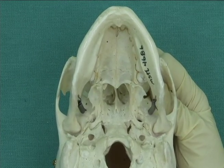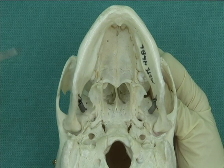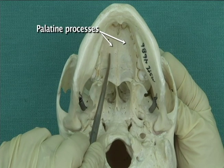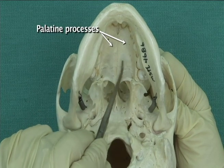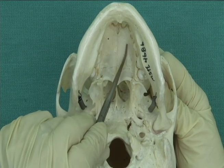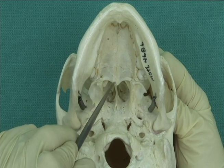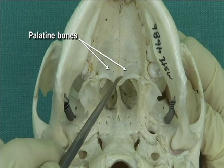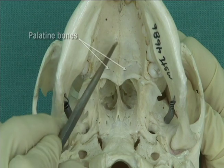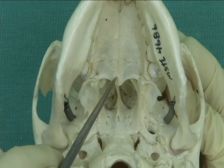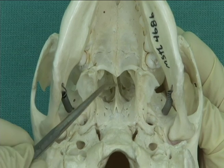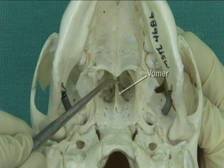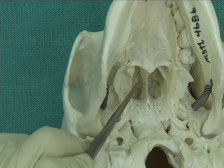Review the osteological features of the base of the skull. Anteriorly, note the palatine processes of the maxilla and the two palatine bones, which together form the hard palate. Immediately posterior is the vomer, which forms part of the nasal septum.